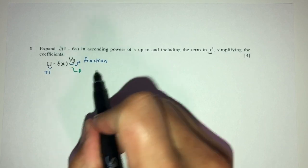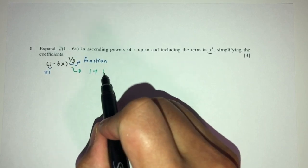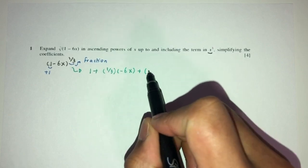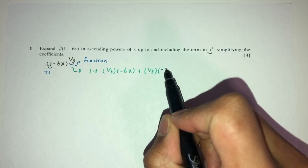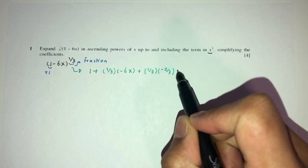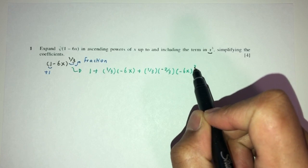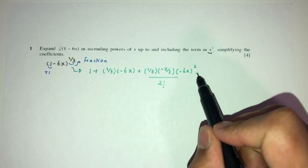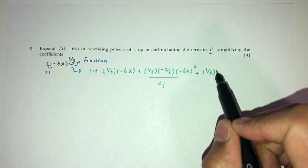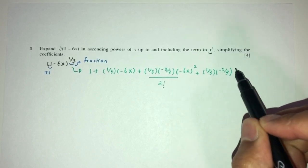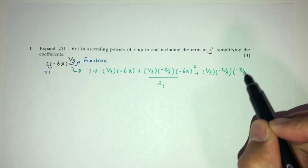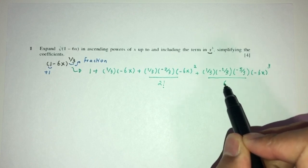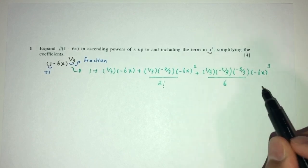So this will be 1 plus n times x, where x here is minus 6x. Plus n times (n minus 1) over 2 factorial times (minus 6x) squared. And then plus (1/3)(−2/3)(−5/3) times (minus 6x) cubed over 3 factorial, which is 6.